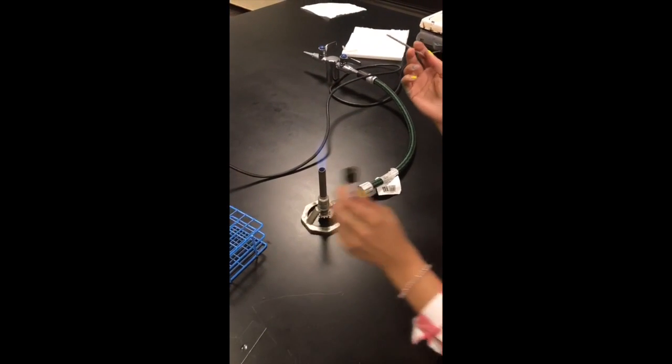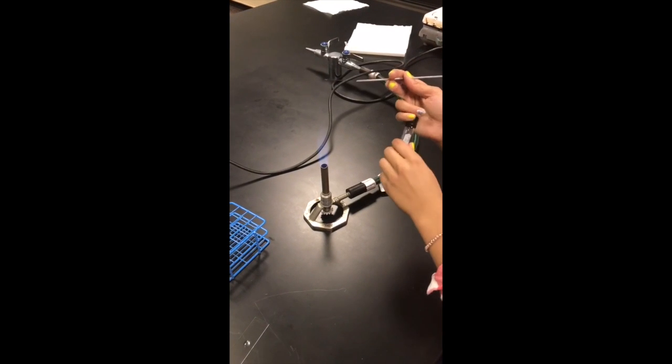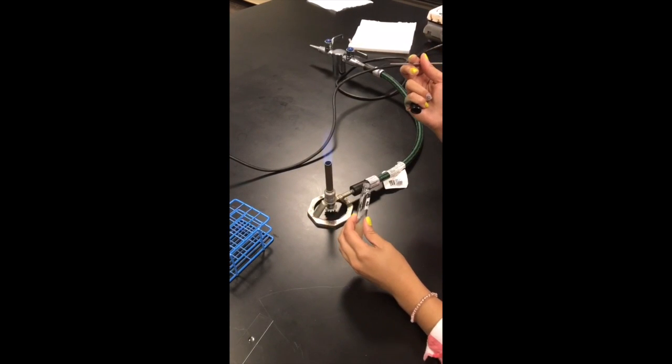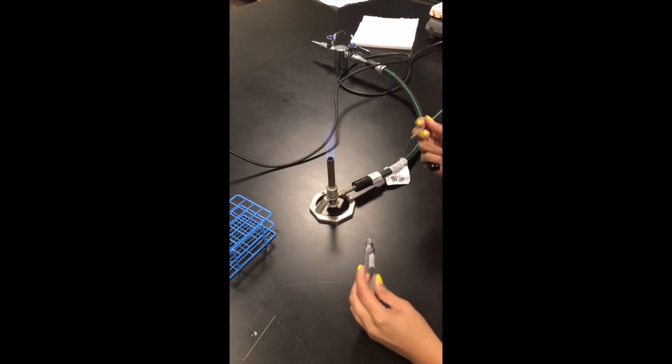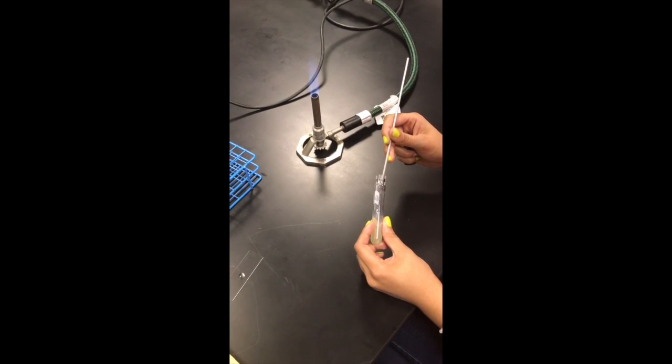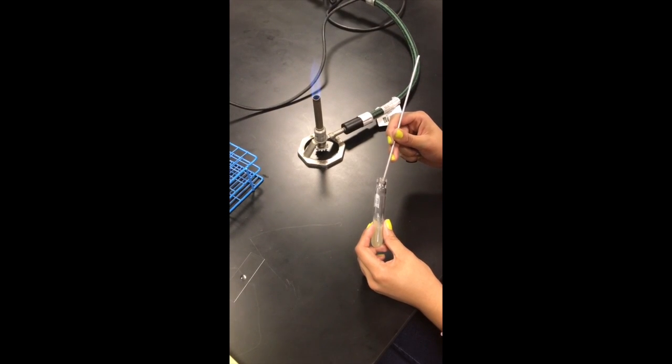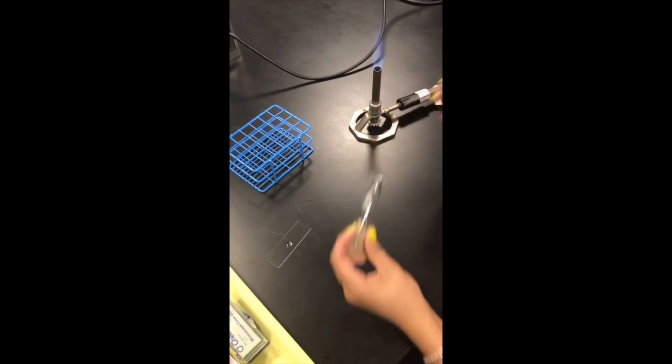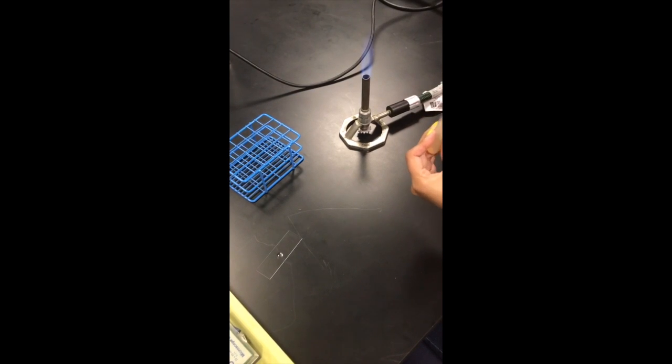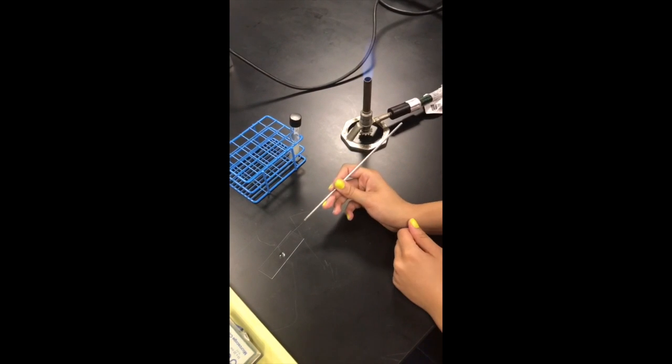You're going to let it sit for about 30 seconds. Take your bacteria, flame open, get some bacteria on your inoculating loop, and flame closed. Put the cap back on.